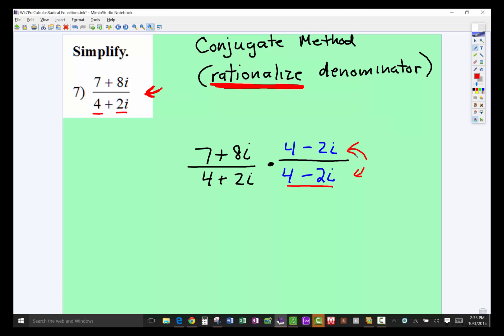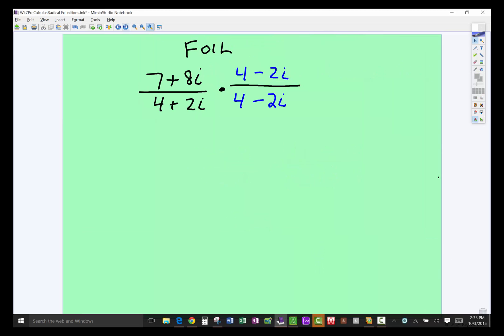And then you're probably going to use the FOIL method. You can use the distributive method or whichever method you're most comfortable with, but you need to use a reliable method for multiplying. So remember the FOIL method says the firsts, the outers, the inside numbers, and the two last numbers. You're going to do that with both the numerator and the denominator.